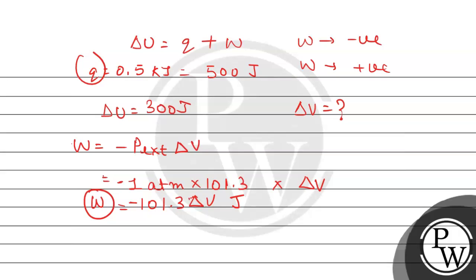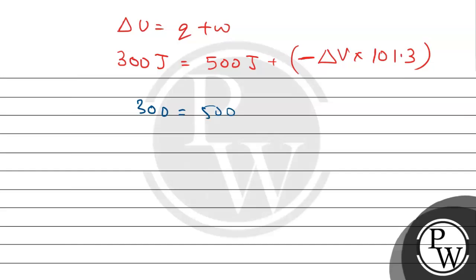Now, we can see we have work done, heat, and this will be used in the equation of the first law of thermodynamics. Now, let us use delta U equals Q plus W. Delta U is 300 joule. The heat is 500 joule. And we have plus sign, and we have already found the work done by the system, which is already negative. That is delta V multiplied by 101.3. Now, let us solve this. 300 equals 500 minus 101.3 delta V.